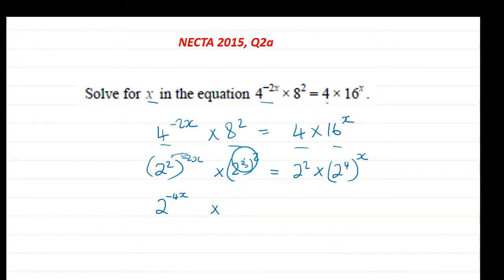2^3 with the bracket raised to power 2, so we multiply powers. This gives us 2^6 equals 2^2 times, again we multiply these powers, so we've got 2^(4x).